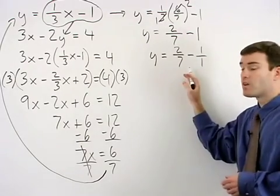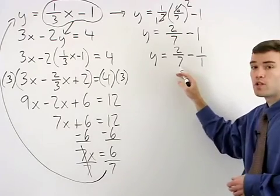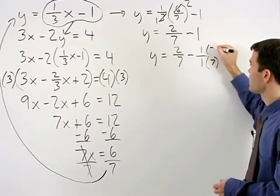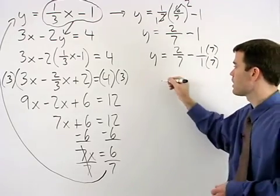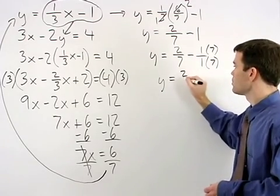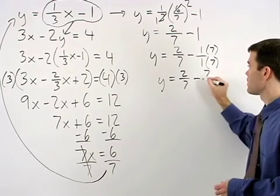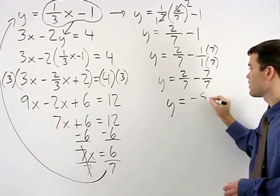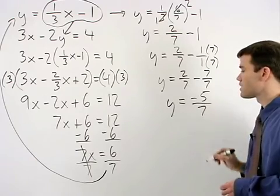And we can simplify this by finding a common denominator of 7. So multiply top and bottom of the second fraction by 7 to get y equals 2 sevenths minus 7 sevenths which simplifies to y equals negative 5 sevenths.